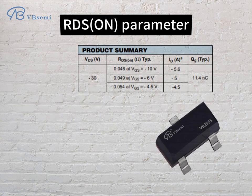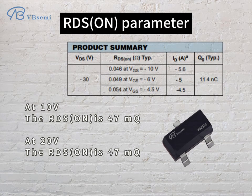RDS(on) parameter: At 10V, RDS(on) is 47mΩ. At 20V, RDS(on) is 47mΩ.